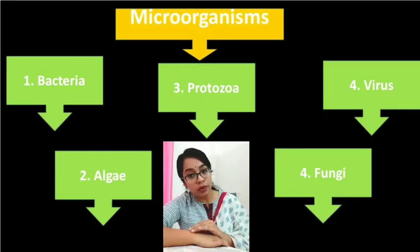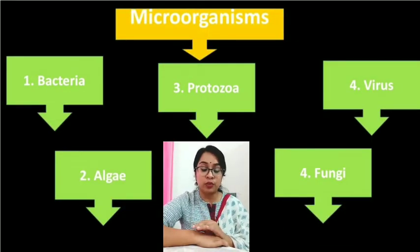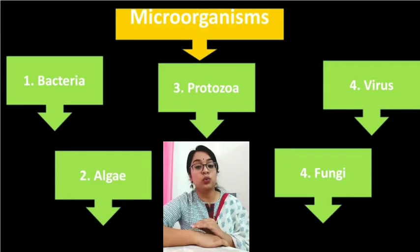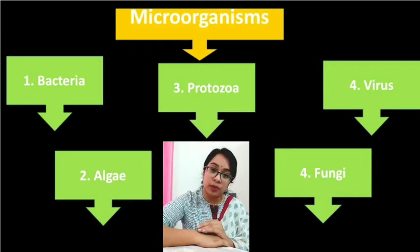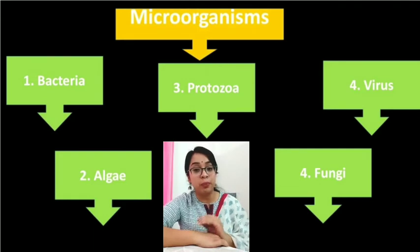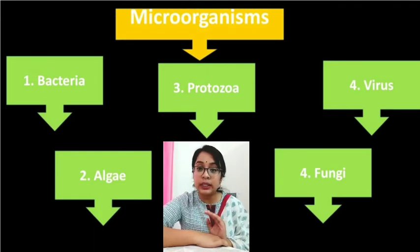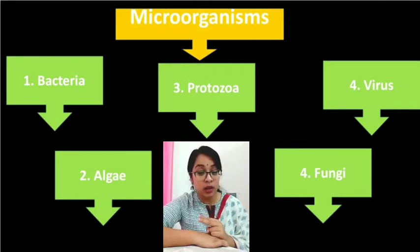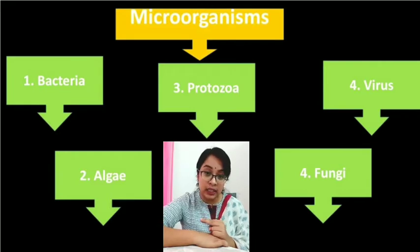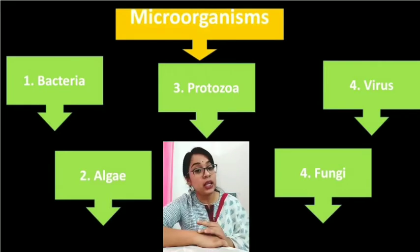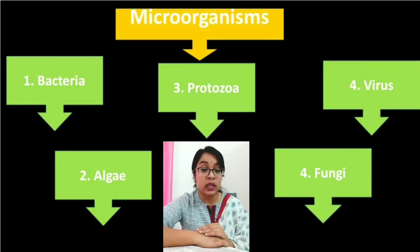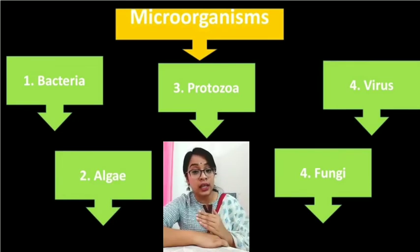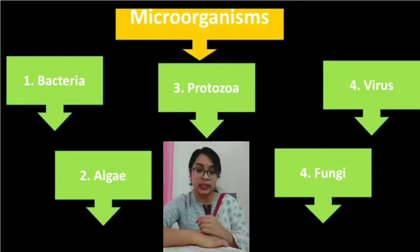We have discussed what microorganisms are and where they are found. Now we will discuss the different kinds of microorganisms. There are different types of microorganisms. Broadly they are classified into five: first bacteria, second protozoa, third algae, fourth fungi, and the last one is virus. Now let us understand each and every type in detail in the further slides.